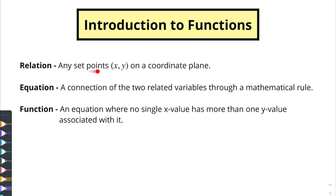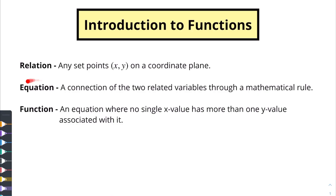A relation is any set of points on a coordinate plane — that could be any x, y value. You could have a whole mess of x and y values plotted on a grid, or you might have just one or two. That's what a relation is: you're relating one x value to a y value. An equation is when you start connecting these related variables, these x and y values, through a mathematical rule.